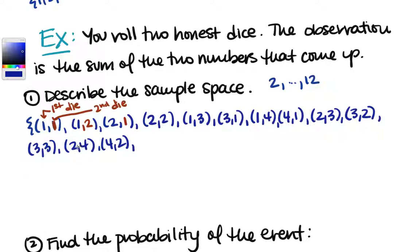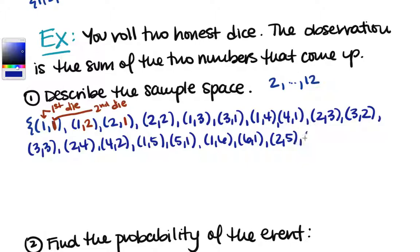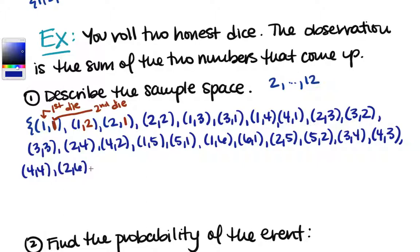Continuing with 6: (3,3), (2,4), (4,2), (1,5), (5,1). For 7: (1,6), (6,1), (2,5), (5,2), (3,4), (4,3). For 8: (4,4), (2,6), (6,2), (3,5), (5,3). And that's going to be it for 8.